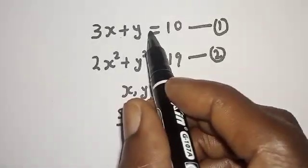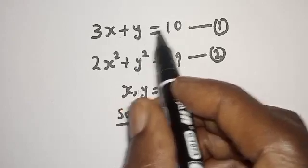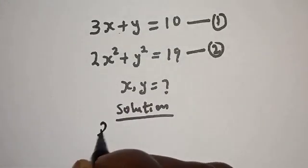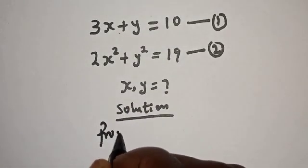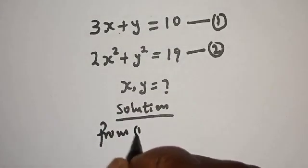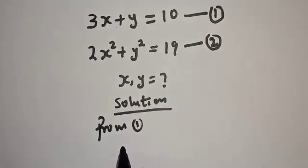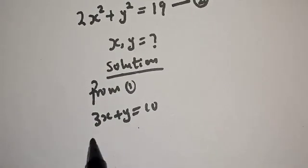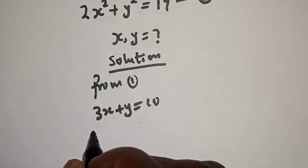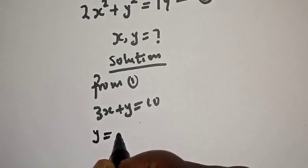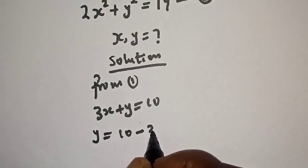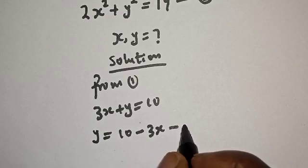From equation 1, we can make y the subject of the formula. From equation 1, we have 3x plus y is equal to 10, so y is equal to 10 minus 3x. Let's call this equation 3.